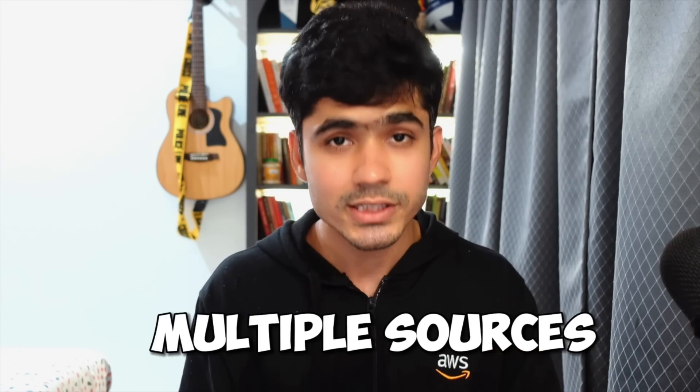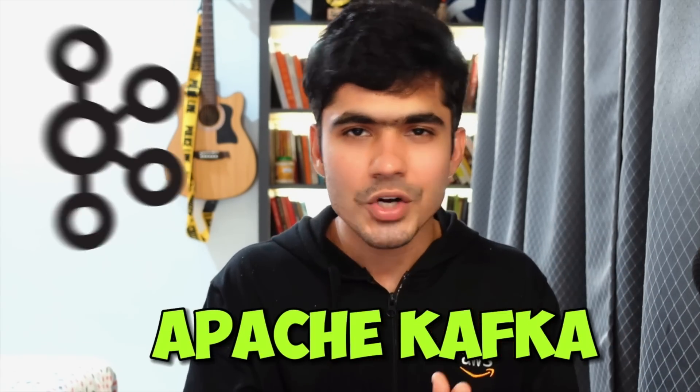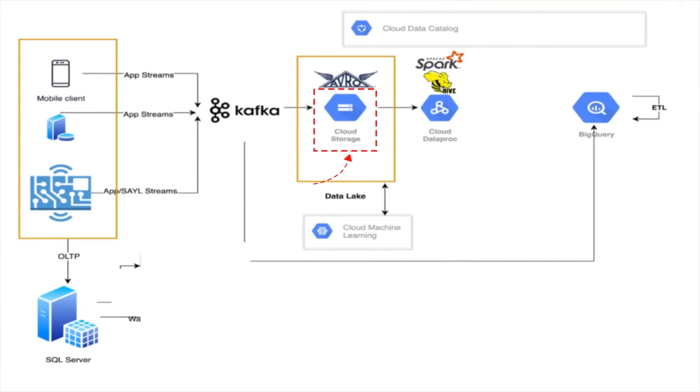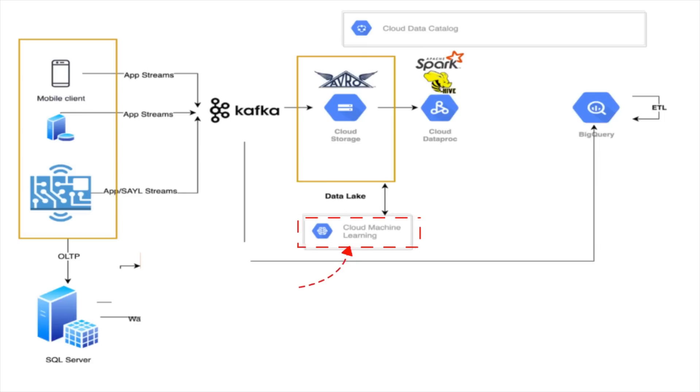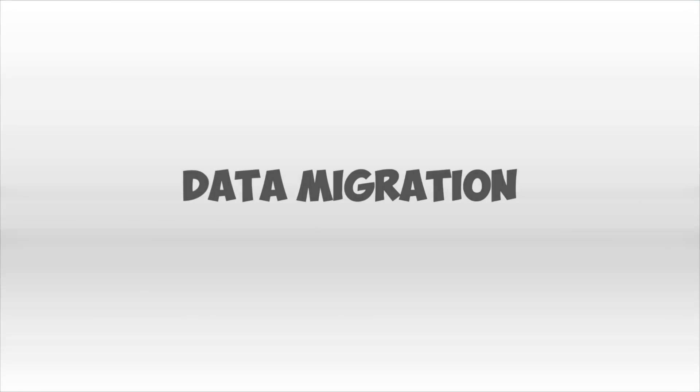The second real-time project had data coming from multiple sources — APIs, RDBMS, manual uploads — all in real-time. We used Apache Kafka to process all of this data and built a data lake on Google Cloud Storage. Once loaded into GCS, the data was sent to two places: a machine learning service for building a forecasting model, and Cloud Dataproc for writing Apache Spark transformation jobs, with the final data loaded onto Google BigQuery for dashboards and analysis.